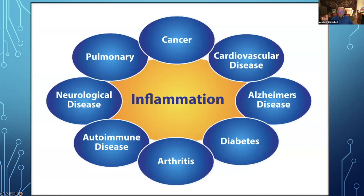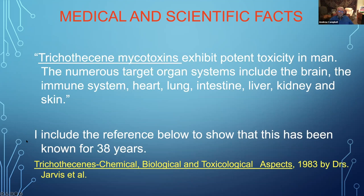What do mycotoxins cause? Inflammation. And from inflammation you get this circle of diseases: autoimmunity, diabetes, Alzheimer's, and more. This was known and published in 1983 — a long time ago. It identified trichothecene mycotoxins as targeting numerous organ systems: the brain, immune system, heart, lung, intestine, liver, kidney, and skin.